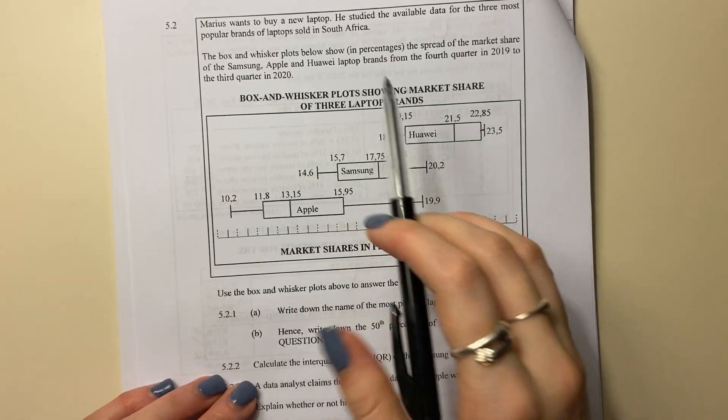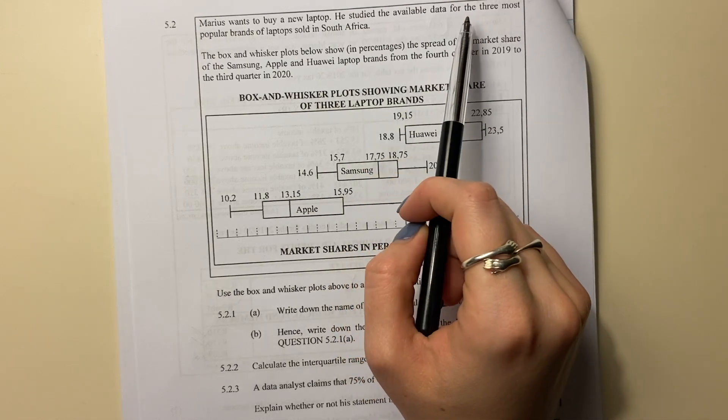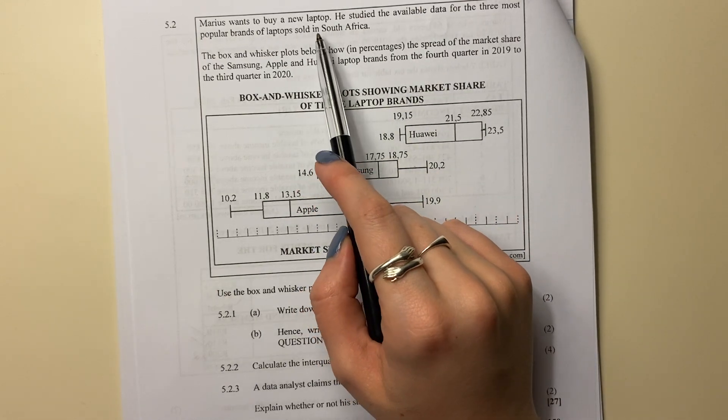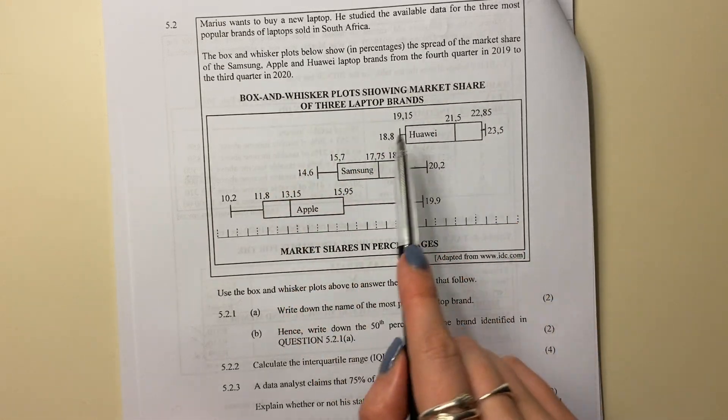Our last video for this paper. Marius wants to buy a new laptop. He studied the available data for the three most popular brands of laptops sold in South Africa. The box and whisker plots, so that's what these are.